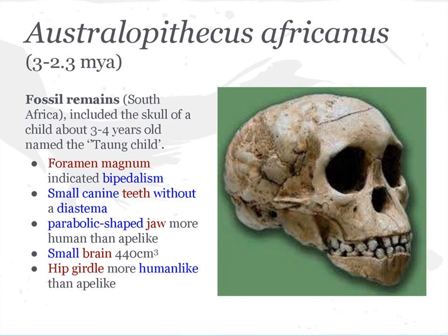Australopithecus africanus — the Taung child — was a juvenile specimen about three to four years in age. The foramen magnum position infers bipedalism. It had small canine teeth without a diastema, a parabolic-shaped jaw more human than ape-like, a small brain but definitely larger than a modern chimpanzee's, and a hip girdle more human-like than ape-like. It had some facial prognathism — a primitive feature — and dates to around 3 to 2.3 million years ago.